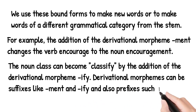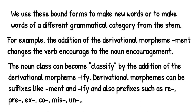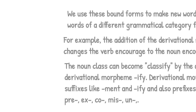Derivational morphemes can also be prefixes such as 're-', 'pre-', 'ex-', 'co-', 'mis-', and 'un-'. Most suffixes are used as derivational morphemes — they include '-ify' and '-ment'. And the prefixes include 'pre-', 'ex-', 'co-', 'mis-', 'un-'. For example, if 'pre-' is added to a word, then it can become 'preview'. These are all prefixes and these were the examples of derivational morphemes.